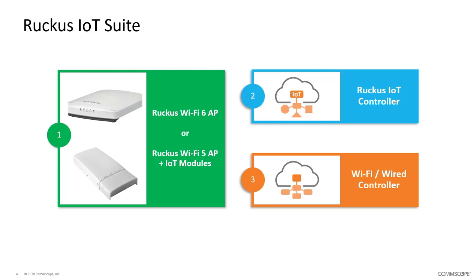That radio can be either Zigbee or BLE and is fully software configurable. Some of our newer higher-end APs now also include multiple radios, so you can have Bluetooth and Zigbee running concurrently on the same access point, giving yourself more density of IoT devices.